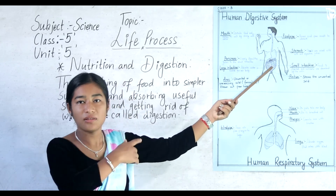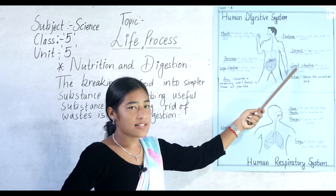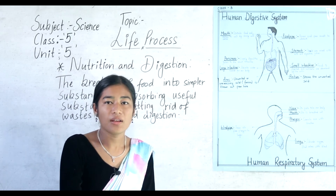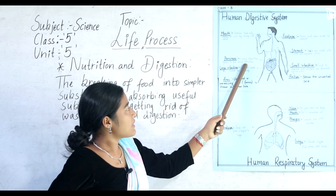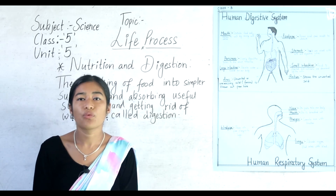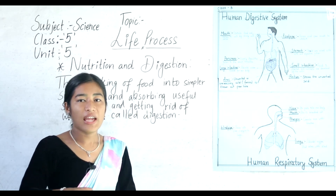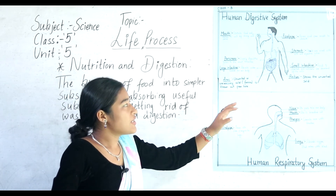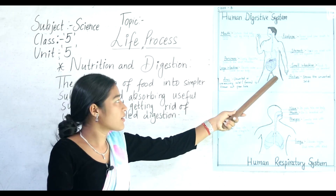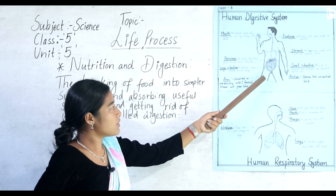In the small intestine, food is digested and nutrients are absorbed by the walls. There is also the large intestine, which absorbs water needed for our body. Then there is the rectum, which stores the unwanted solids — the stool.